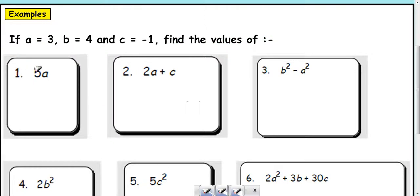Question one: Work out or evaluate 5A. Now I look up here and I see that A is 3. And I know from my algebra that 5A means 5 times A. So it's 5 times 3, and it's 15. So that's your answer.